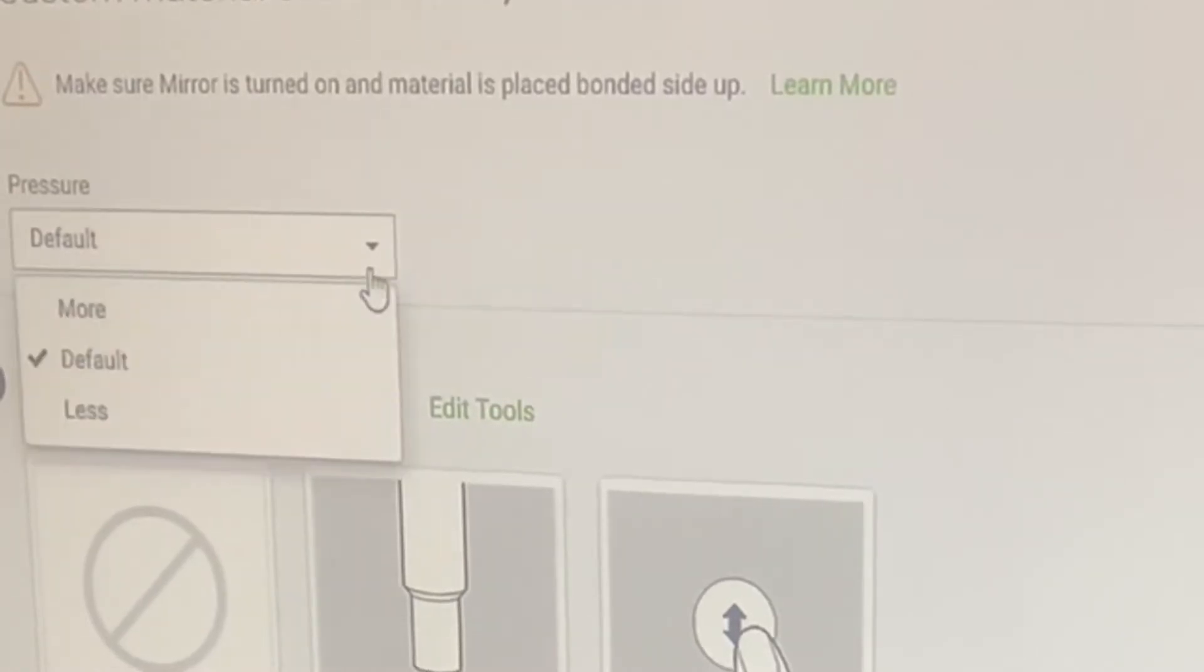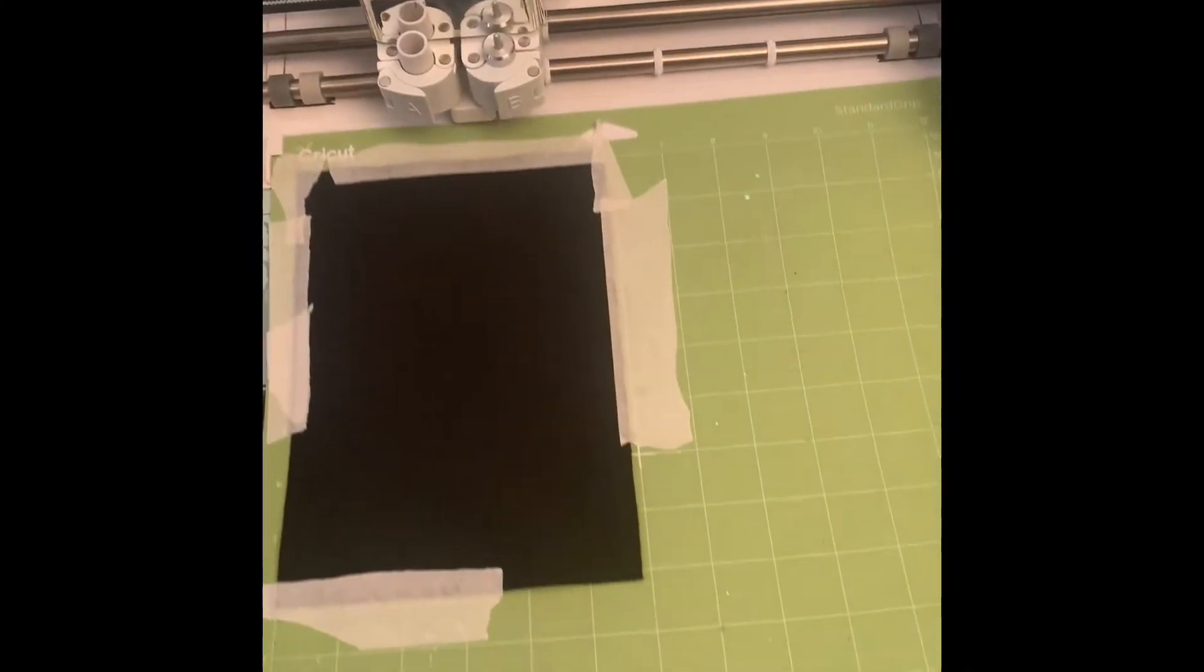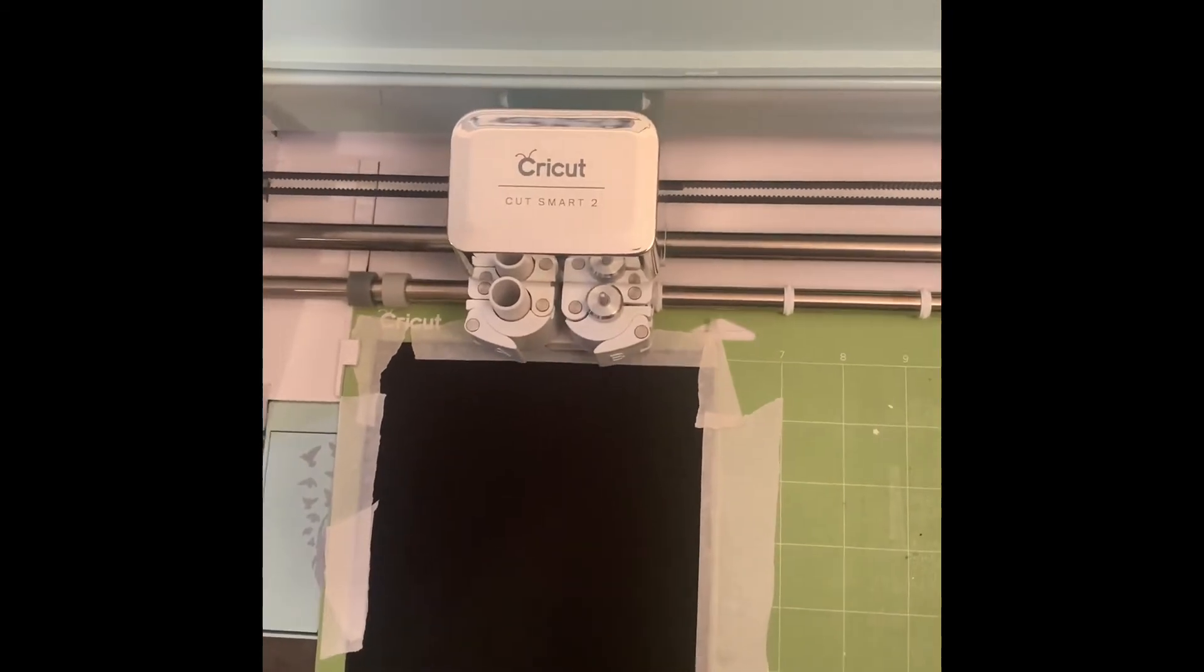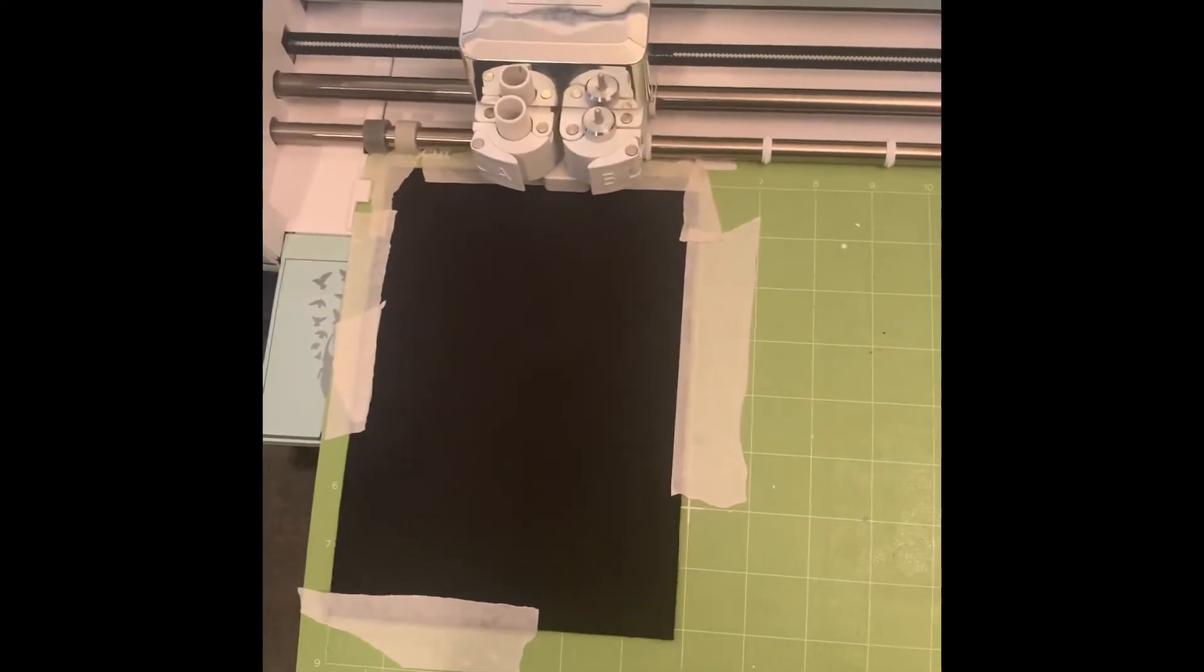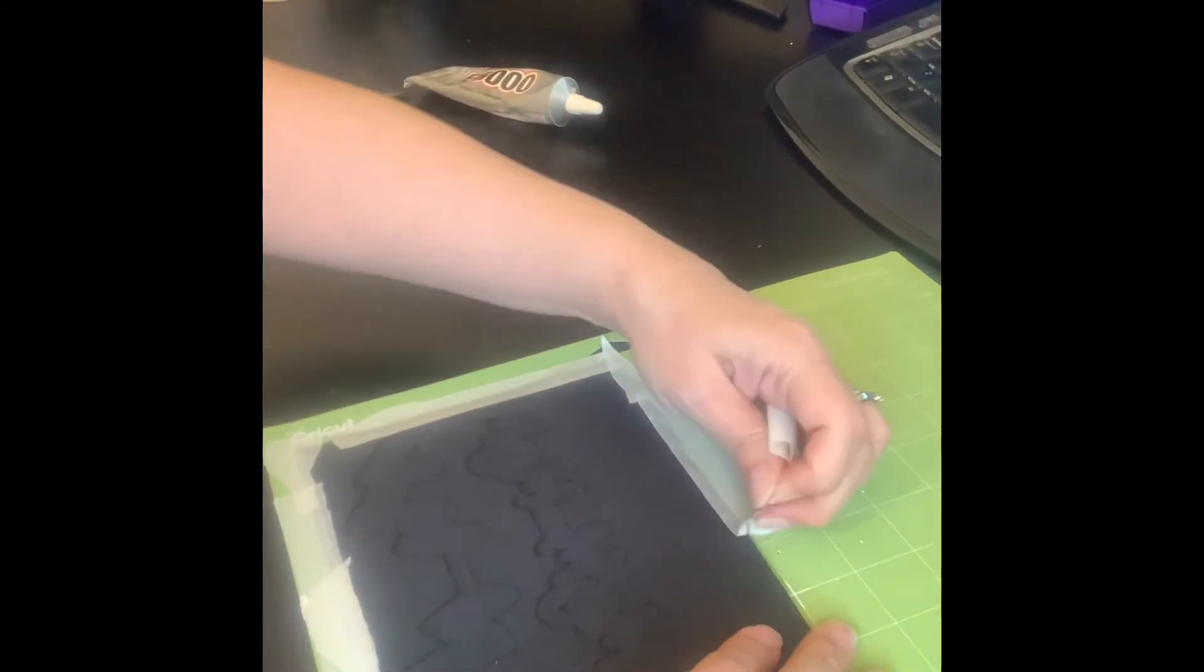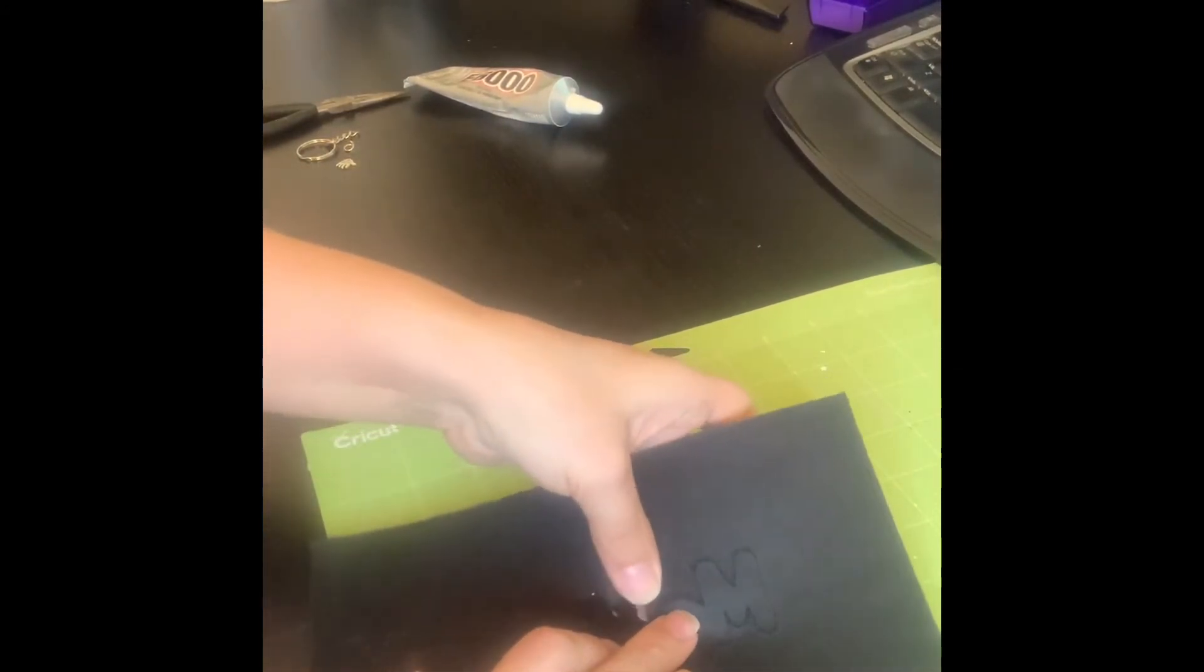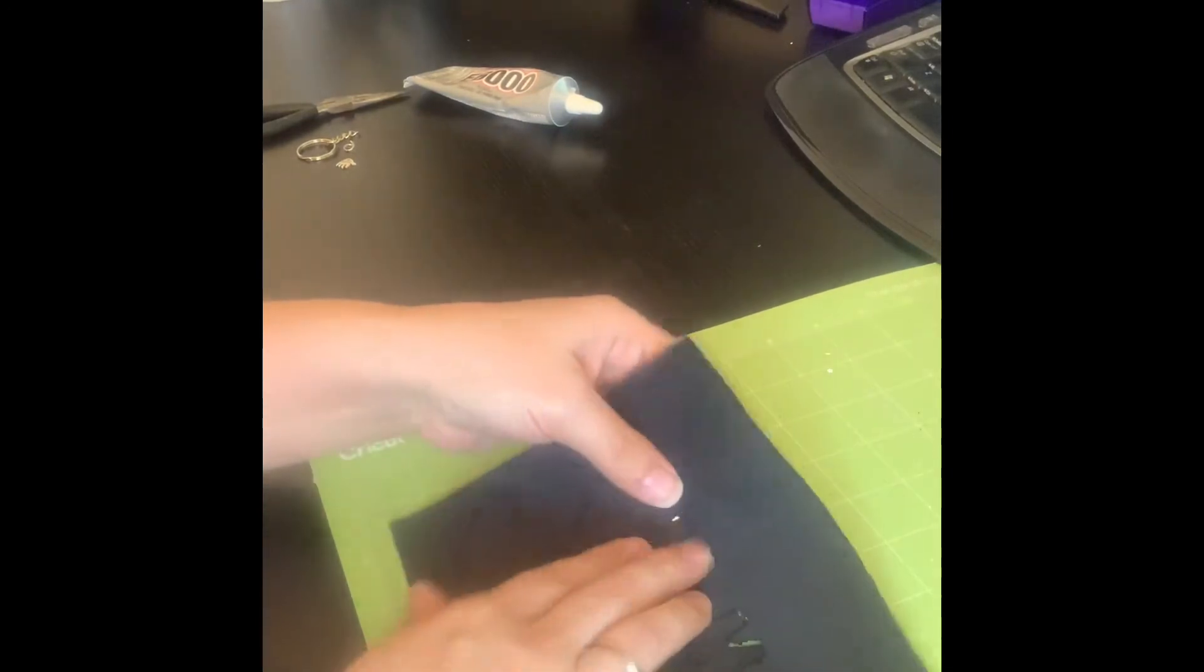Then you're going to click on more and then we are going to load and cut. Okay, it is done cutting. I like to pull towards the back. It gives it a cleaner look once it starts coming out, so I'm just gonna keep weeding this and I will be right back.